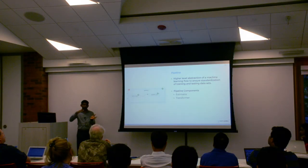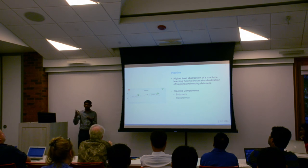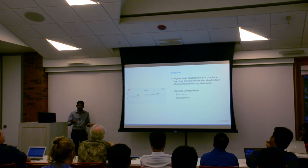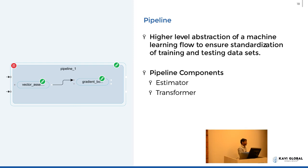You have to do this for the training data — meaning you train or develop the model based on a set of observations. Once you have the model developed, you need to test it on another set of observations, which we call the testing data. But the testing data also needs to undergo all these 8 to 10 processes, which are hugely time-consuming and frankly non-value-adding. Pipeline gives a framework wherein you just need to pass both the training and testing data to this pipeline, and all the individual steps — if there are 8 or 10 steps — are done automatically by the pipeline itself.